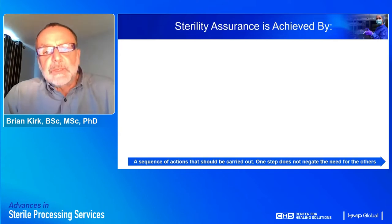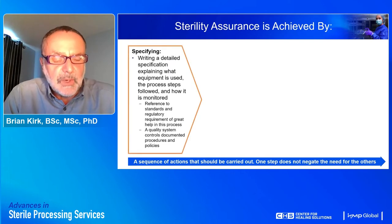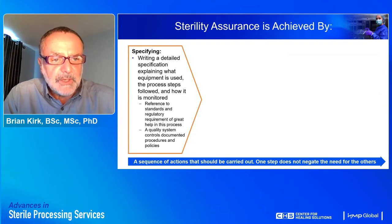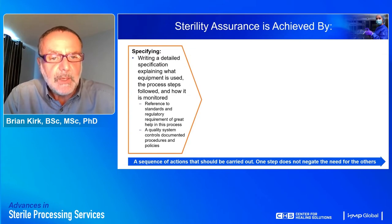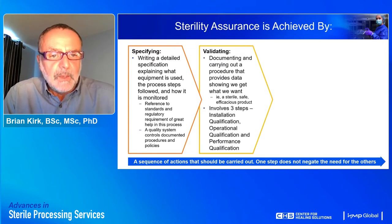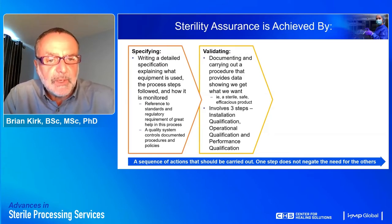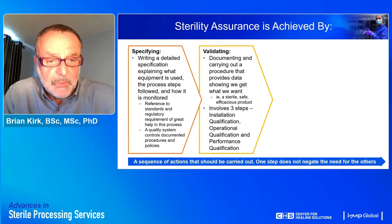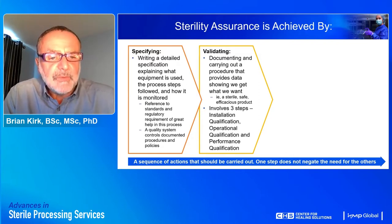Sterility assurance is ensured following three processes. The first is specifying — writing a detailed specification explaining what equipment will be used, the process steps, and how it should be monitored. The second is validation — documenting a procedure that provides data showing what we want is what we get, that is a sterile, safe, efficacious product. Validation involves three steps: installation, operational, and performance qualification.